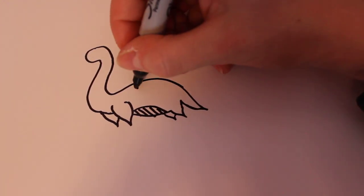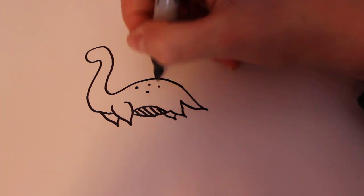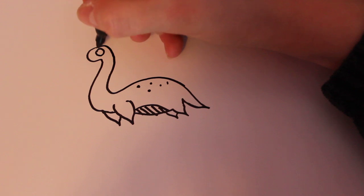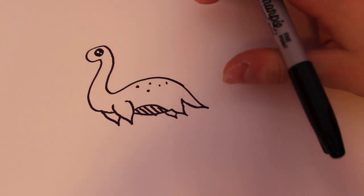And then for a few details, I'm going to add some dots on the back. And then for the eye, I'm going to draw two circles inside a circle and then color the rest in black like that.